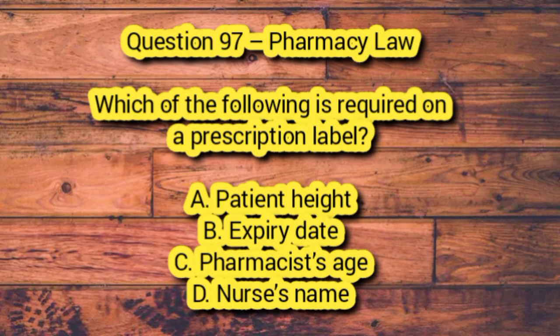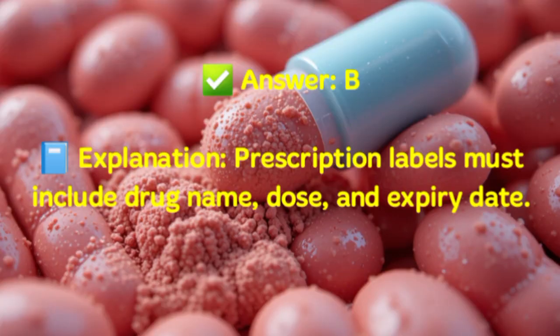Question 97 – Pharmacy Law. Which of the following is required on a prescription label? A. Patient height. B. Expiry date. C. Pharmacist's age. D. Nurse's name. Answer: B. Explanation: Prescription labels must include drug name, dose, and expiry date.